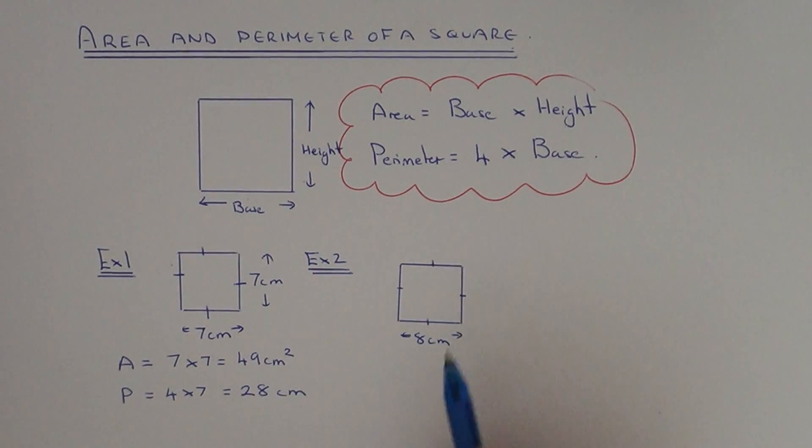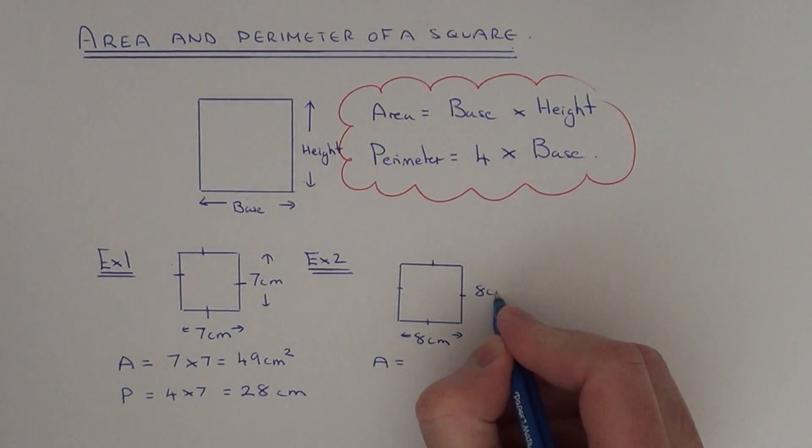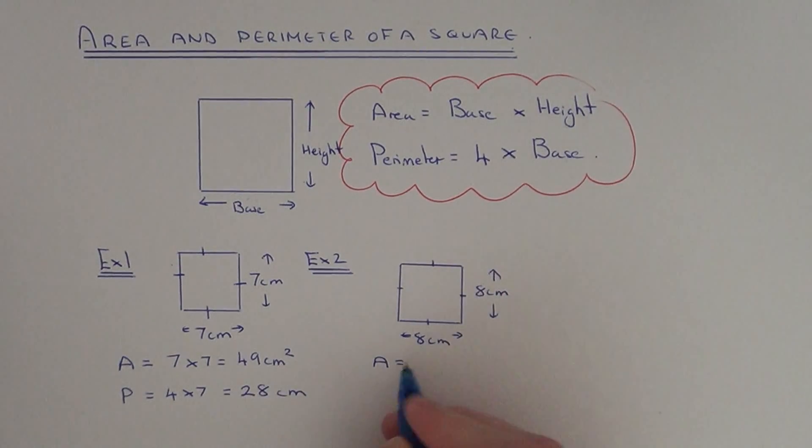Let's move on to example two. This time we've got a square of side length 8 centimeters. To work out the area, just multiply the base by the height. Again, the height is also 8. So we do 8 times 8, which is 64.